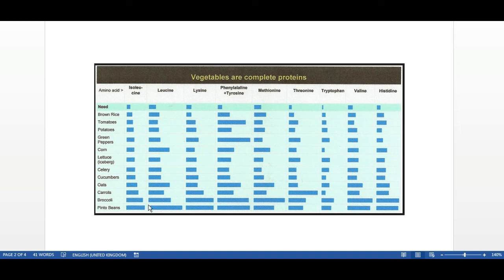And there is a common misconception that vegetables are not complete protein sources, that you'd need to combine two types in order to get all of your different essential amino acids. And this simply isn't true.